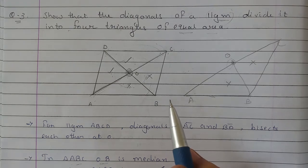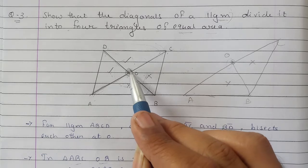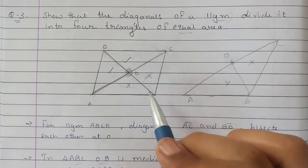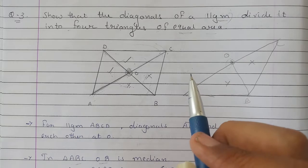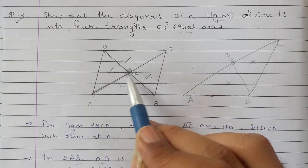bisect each other. This means O is the midpoint of AC, and O is also the midpoint of BD. Now consider triangle ABC, where O